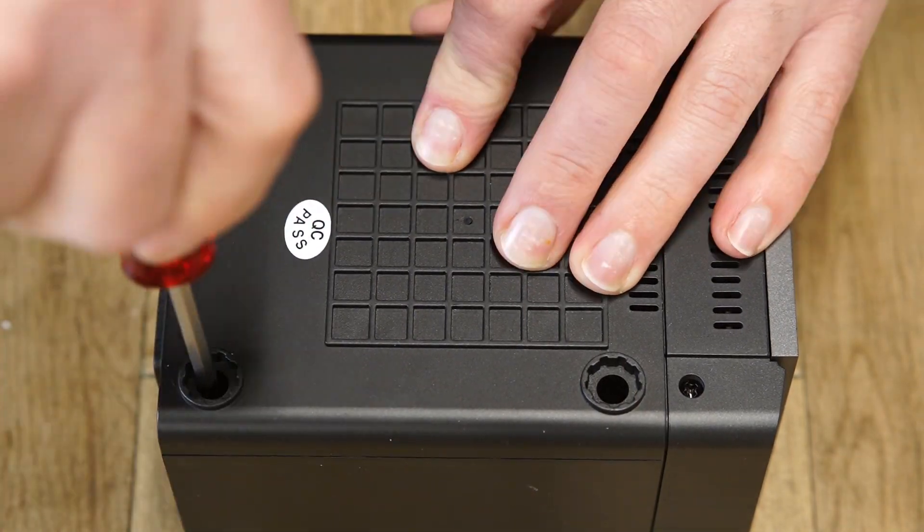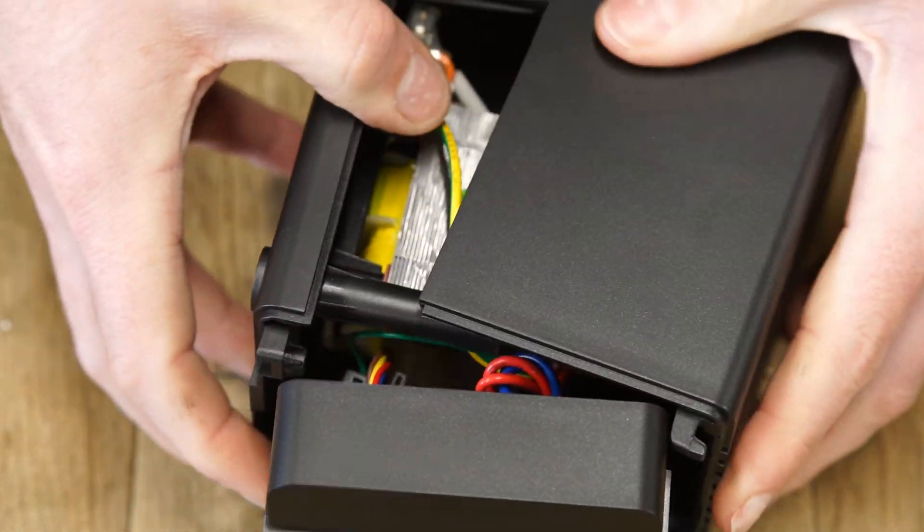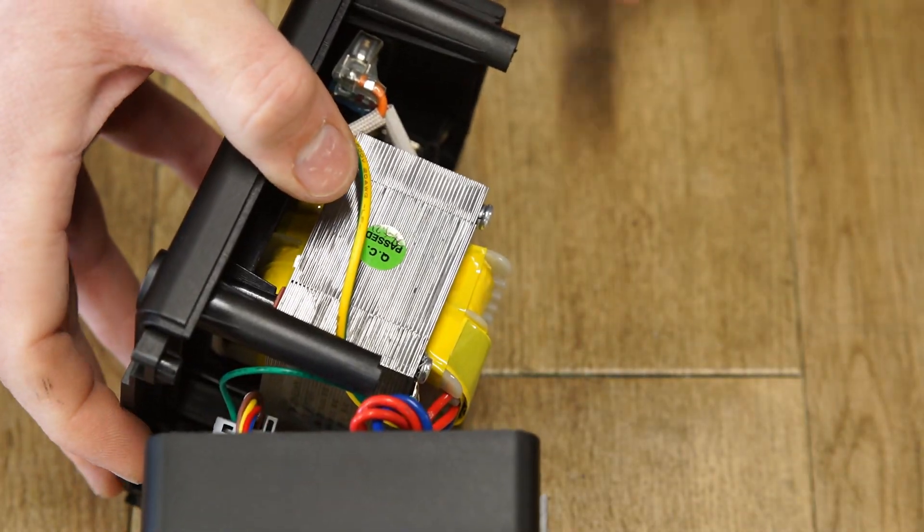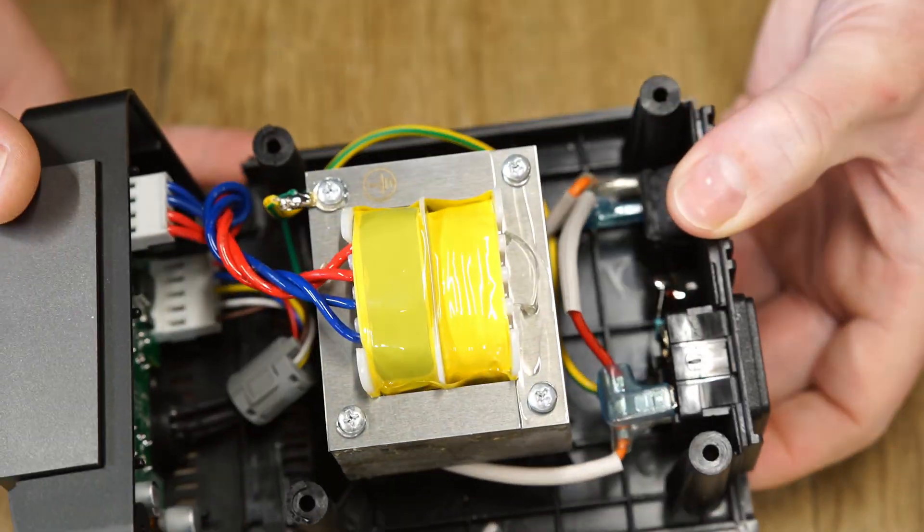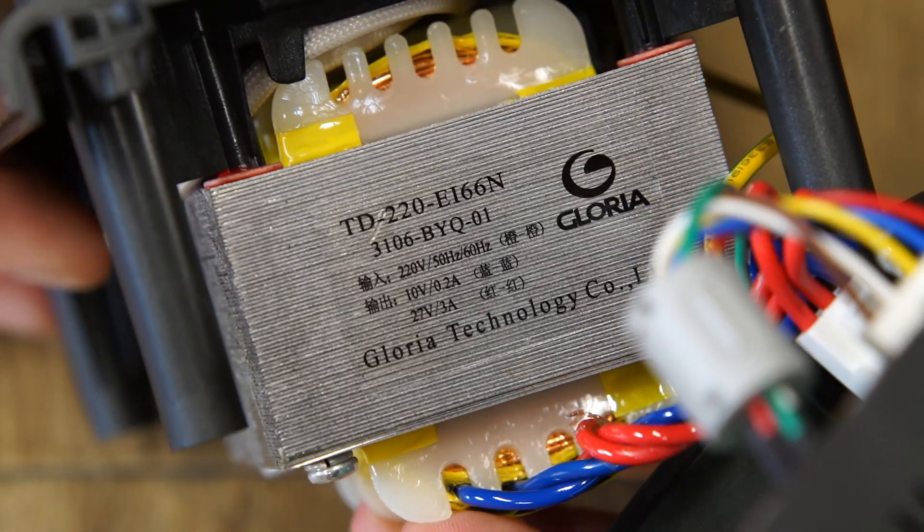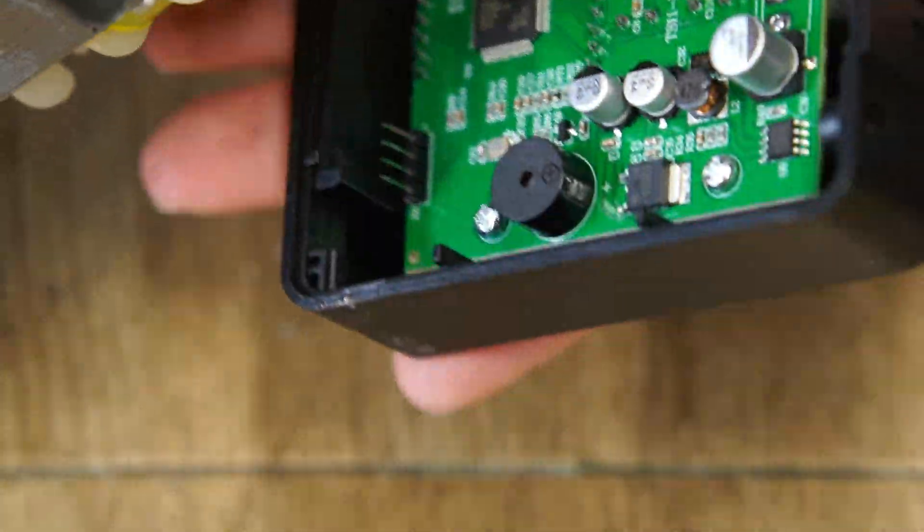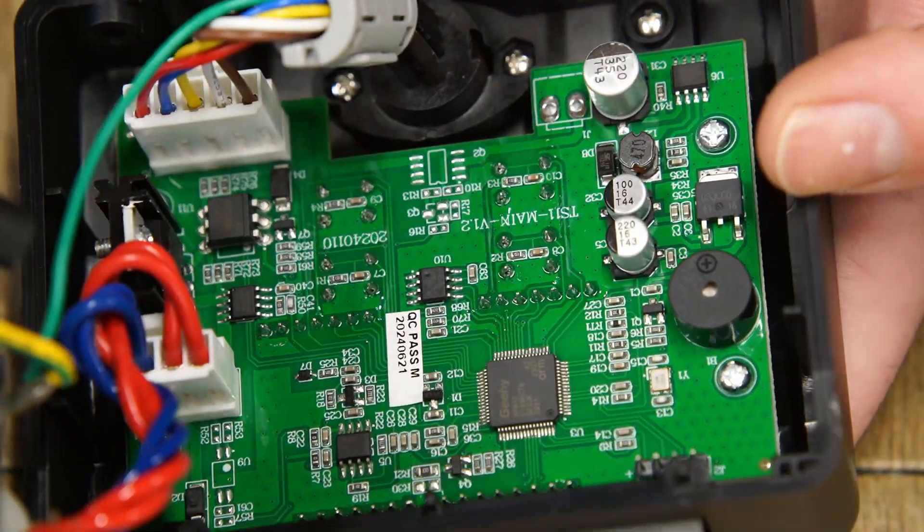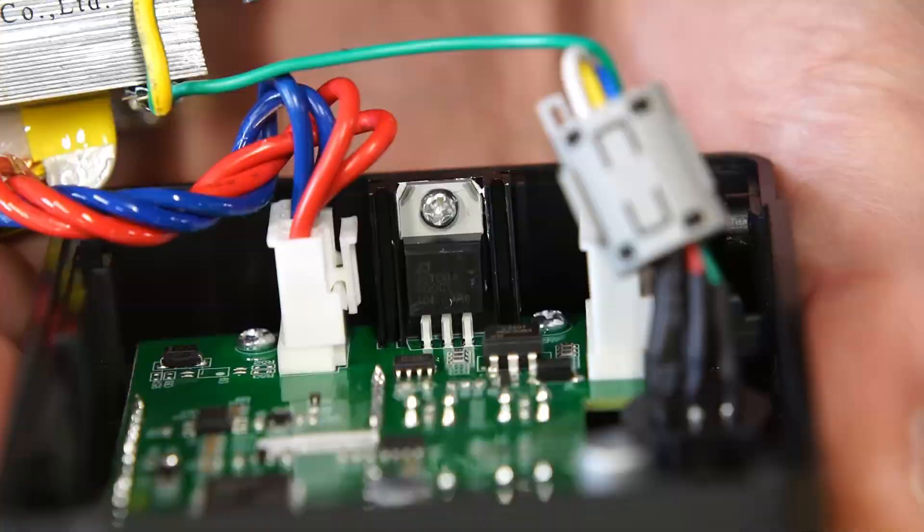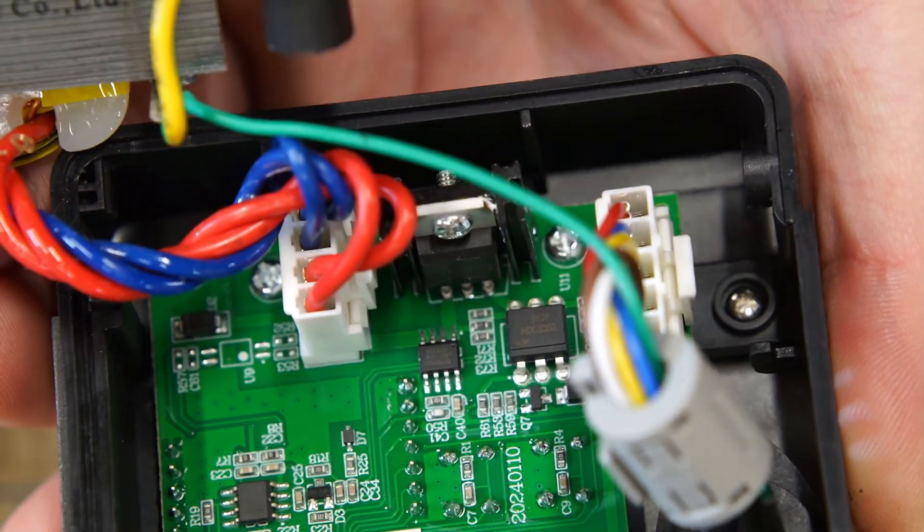Before we wrap up, let's take a look inside the TS-11 and see what is what. Inside there is an isolation transformer, which outputs 10V at 200mA and 27V at 3A. The 10V output will be used to run the logic and display portion of the circuit, while the 27V output will be sent to the iron tip for heating. The main IC for regulating power to the handpiece is a JST-08, which is an 8A Triac mounted to a heat sink, which is great to see.